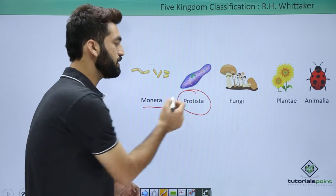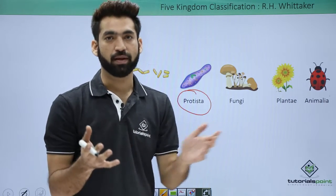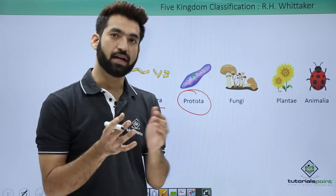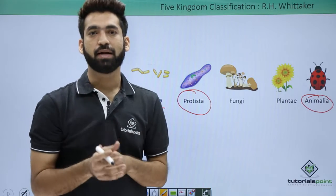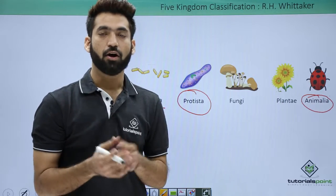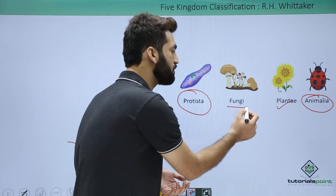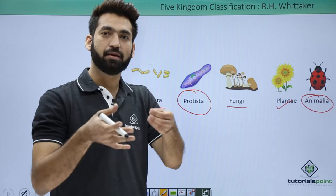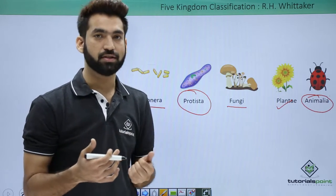When he observed multicellular eukaryotes, they could be plants or animals. Multicellular animals have the kingdom called Animalia. When he observed multicellular plants, they could be autotrophic or heterotrophic. Autotrophic plants belong to kingdom Plantae, and heterotrophic plants belong to the group called Fungi. This is how he classified organisms based on evolutionary relationships.